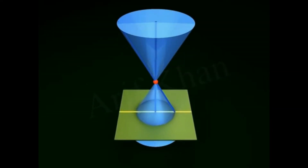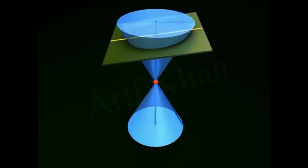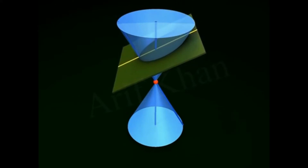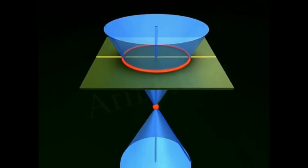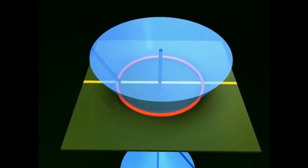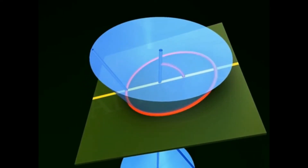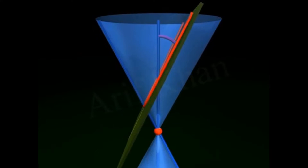If a plane intersects a double-right circular cone, we get two-dimensional curves of different types. These curves are called conic sections. Depending on the angle made by the plane with the vertical axis of the cone, the plane can cut the cone in three different ways.